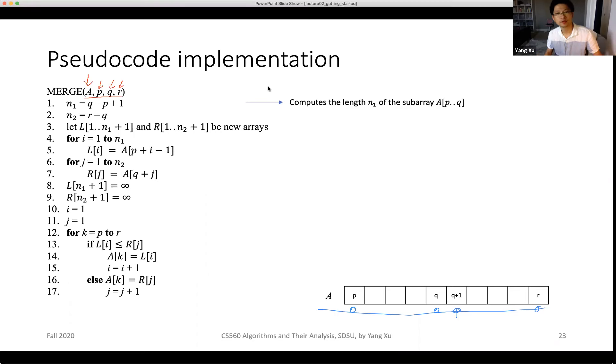The first two lines of code compute the length of the two sub-arrays. q minus p plus one is the length of the first area, that's n1. n2 is the length of the second sub-sequence.